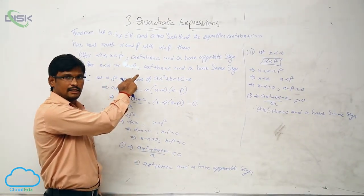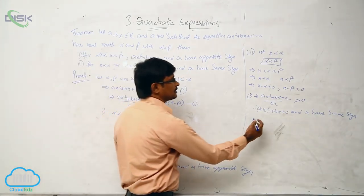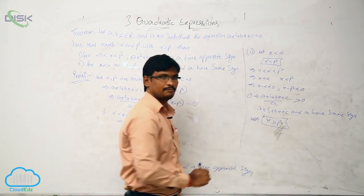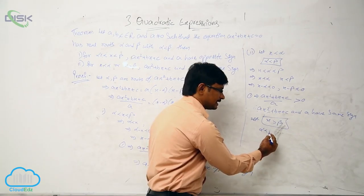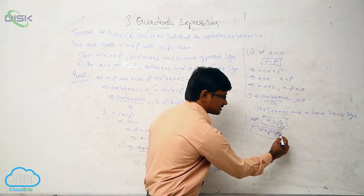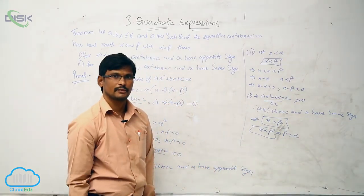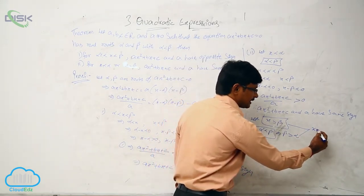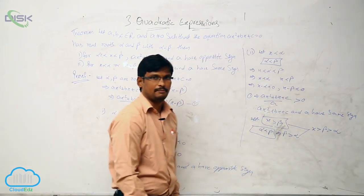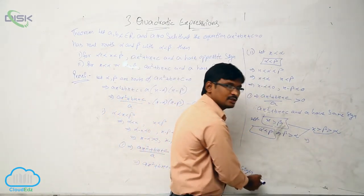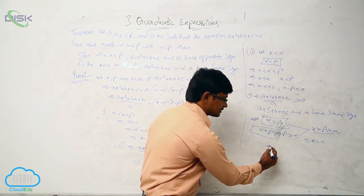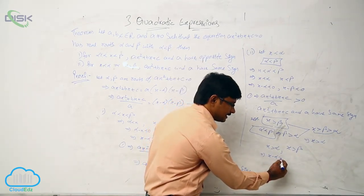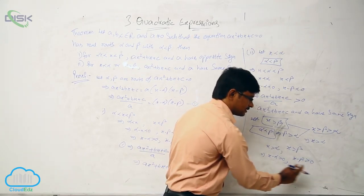Now in the second sub-case, we take x greater than beta. From the given relation alpha is less than beta, we can write beta is greater than alpha. Combining x greater than beta and beta greater than alpha, we get x is greater than alpha. So x minus alpha is greater than 0, and x minus beta is greater than 0 — both are positive, the same sign.